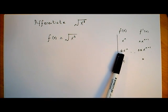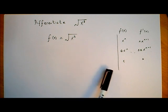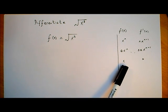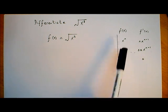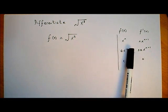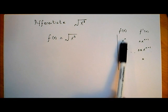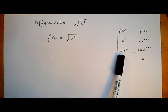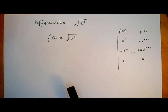When we differentiate ax to the power of n, we get n times ax to the power of n minus 1. And when we differentiate a constant, say c, we get 0. So there's no square roots in the f of x section, so there's no rule to tell us what happens when we differentiate square roots.